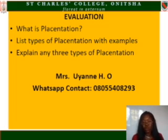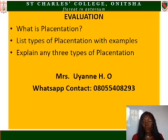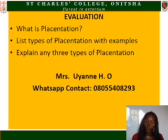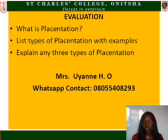The types of placentation include: axile placentation (seen in tomato and orange), marginal placentation (seen in cowpea or cassia), parietal placentation (common in purple), apical placentation (seen in red pepper and green pepper), and basal placentation (where seeds are implanted at the base of the fruit). Evaluation questions: 1) What is placentation? 2) List types of placentation with examples. 3) Explain any three types of placentation.